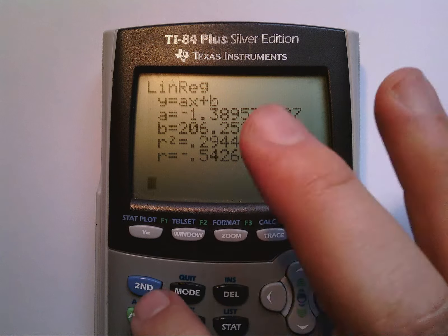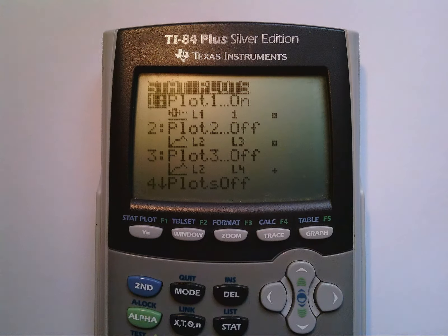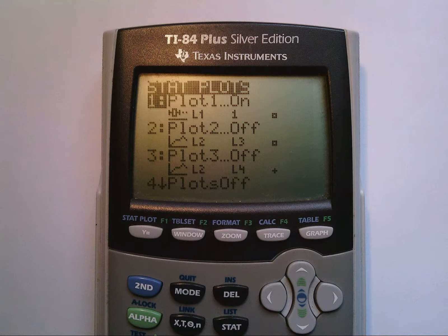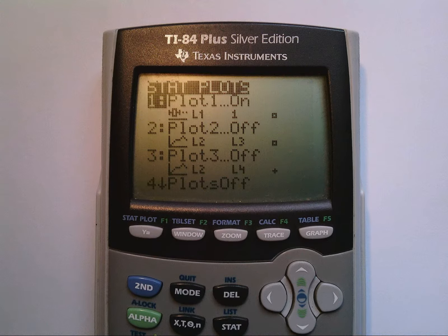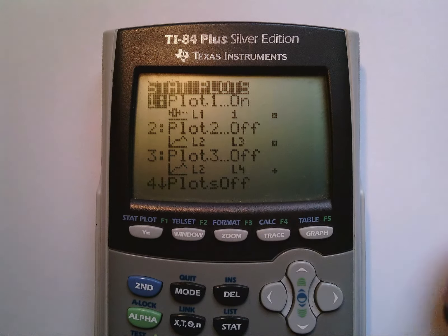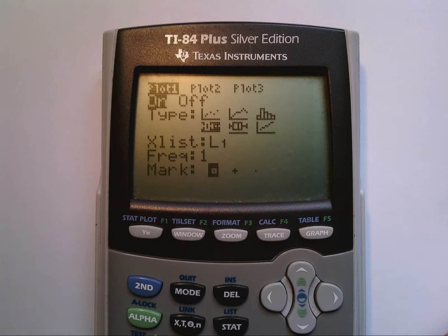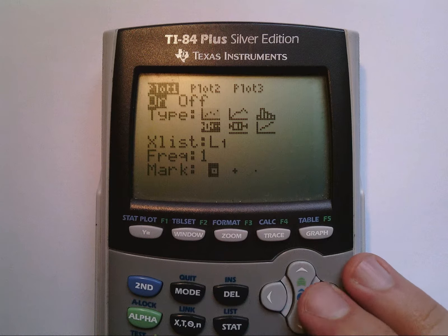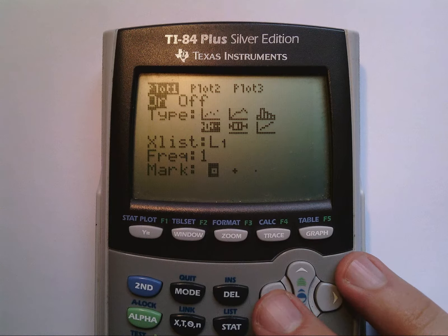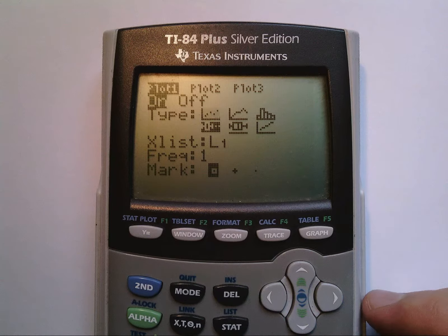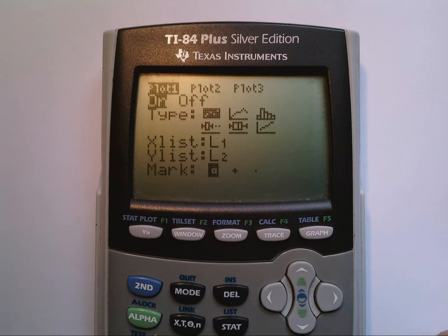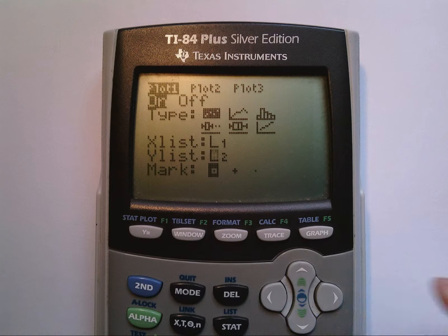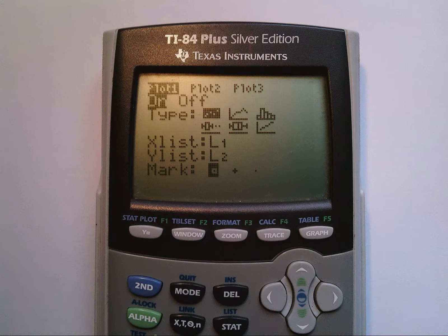So, go to second y equals to bring up stat plot. Make sure all of your plots are off except for number one, and that's where we're going to enter in our data. When we're in number one, I'm going to turn on my first plot, which is just a standard dot plot, and my x-list is L1, my y-list is L2, and I'm fine with the hollow dots.